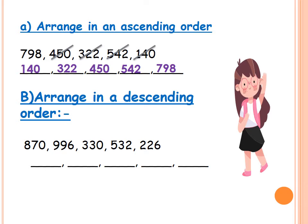Arrange in a descending order. In a descending order, we go from the biggest number to the smallest number. Each time we look for the biggest number because we start with the biggest one. What is the biggest number here? 996. Excellent. Then look for the biggest one: 870. Then 532. Then 330. And the smallest one is 226.